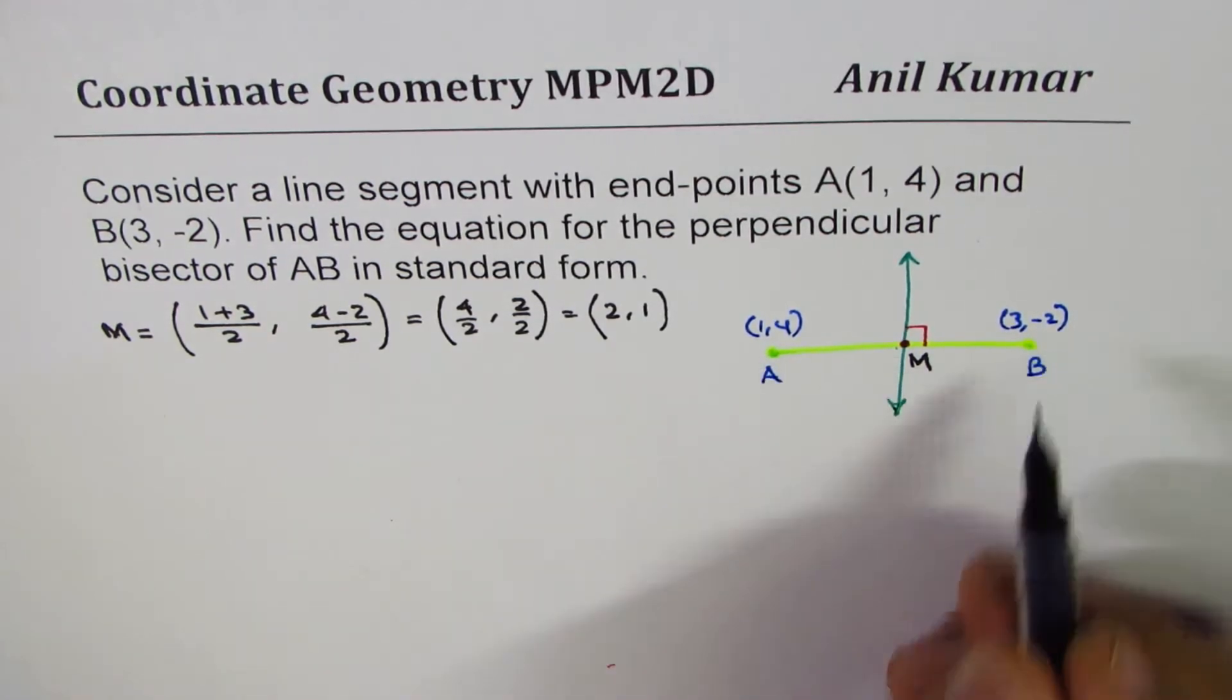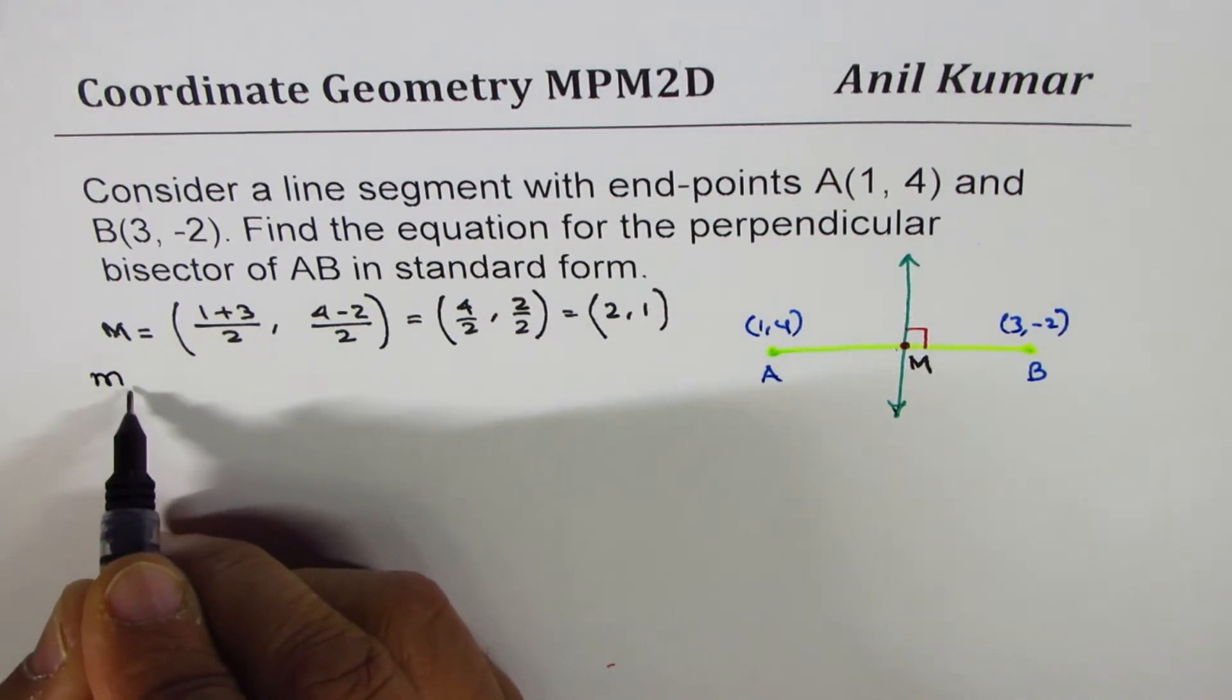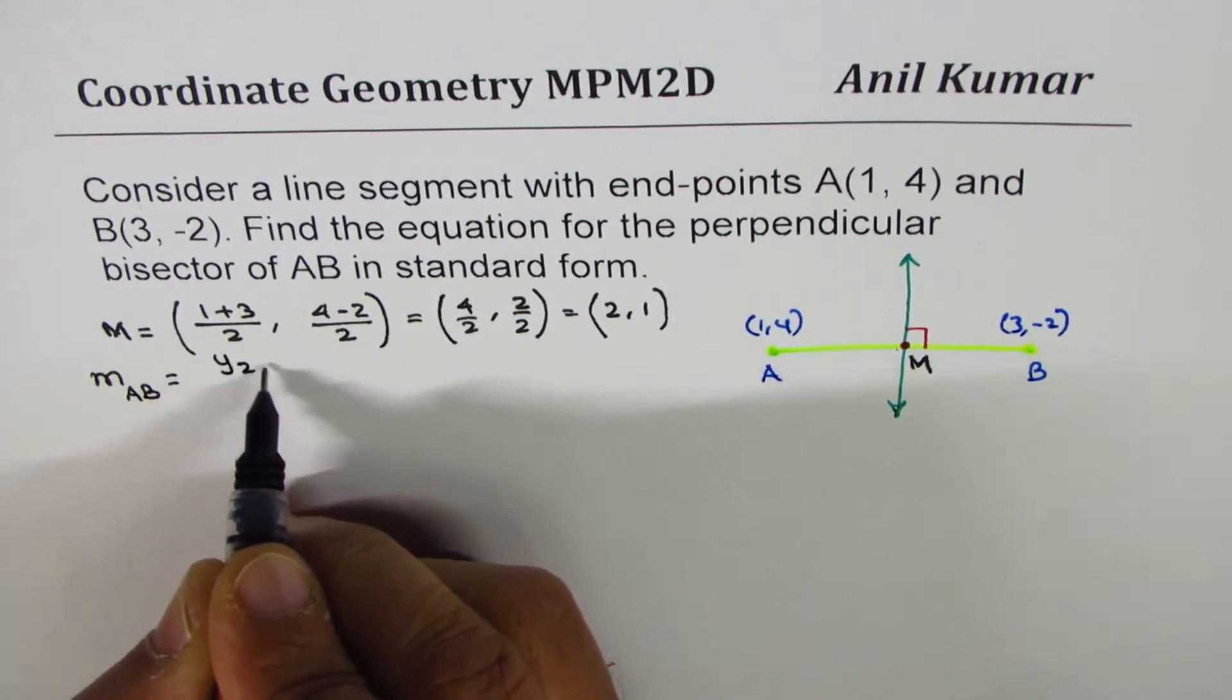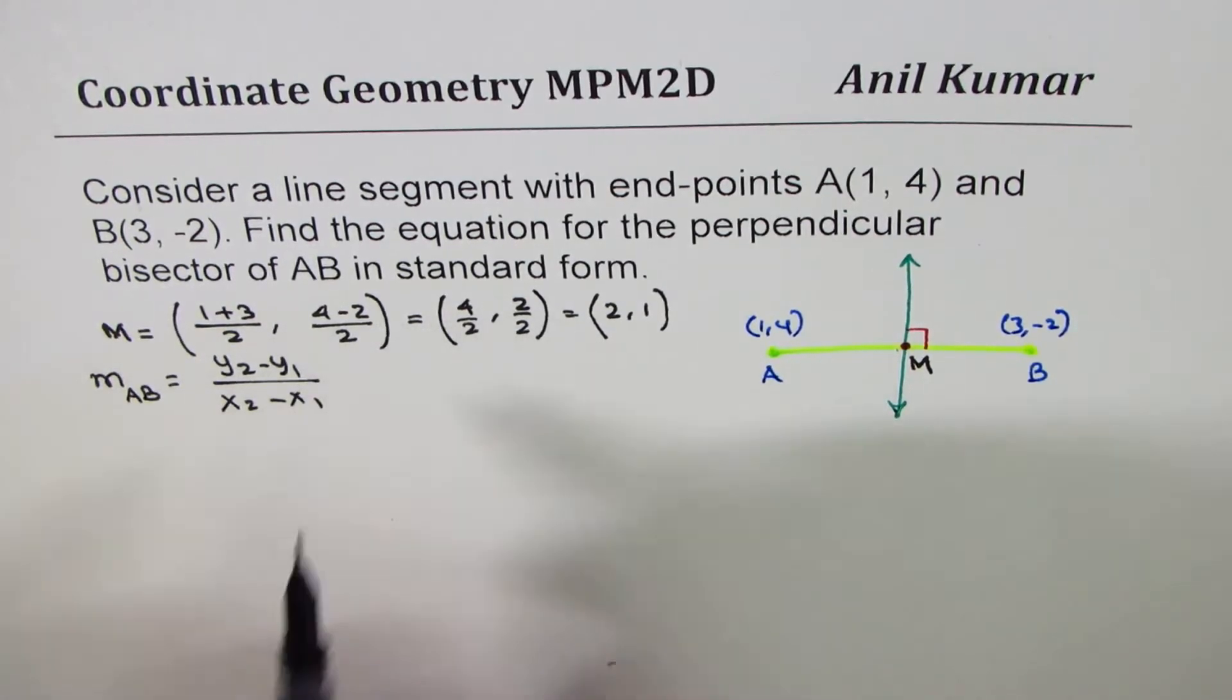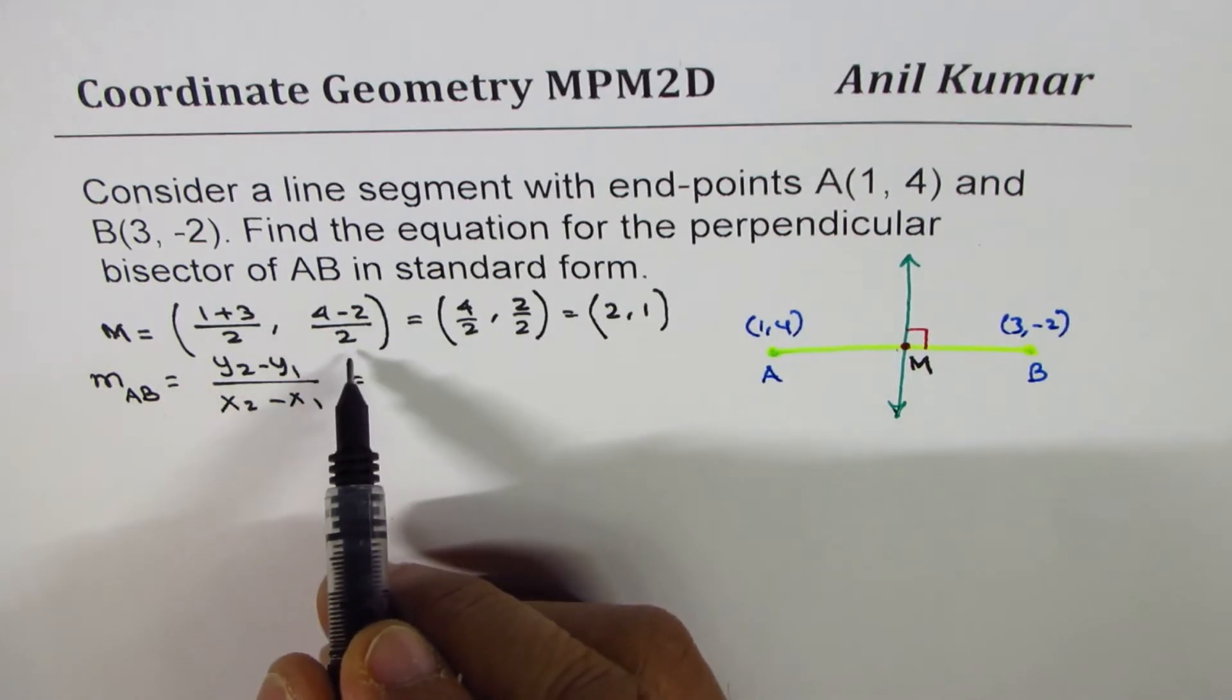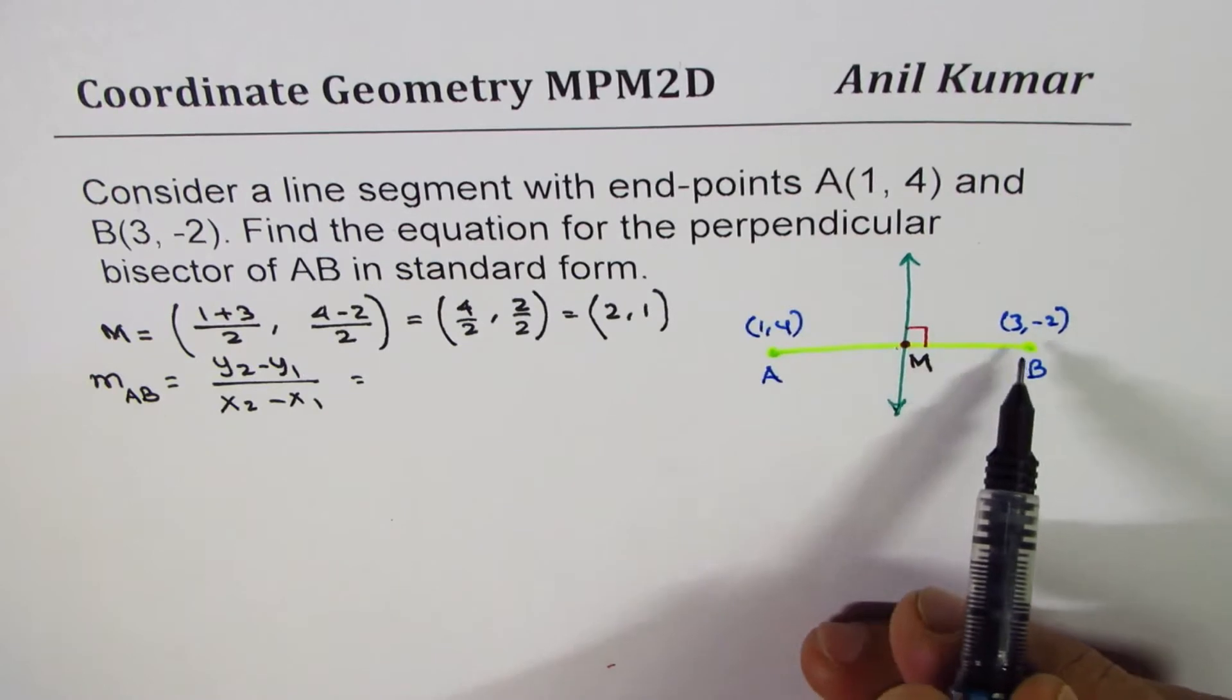Now, let's find slope of AB. So, slope, lowercase m of AB, slope is, as you know, (y2-y1)/(x2-x1). I didn't write the formula in the first case. It is (x1+x2)/2, (y1+y2)/2. y2 minus y1. You could actually consider any point as first point or second point.